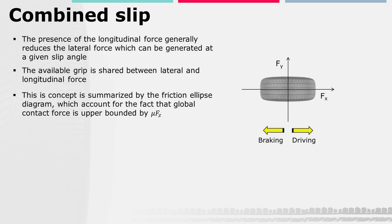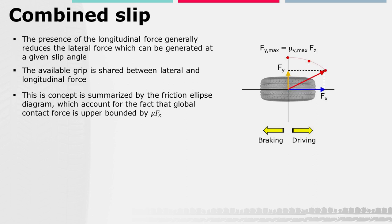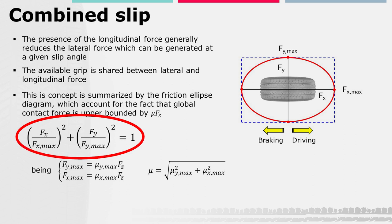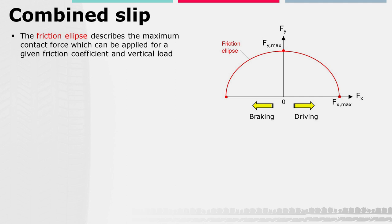The so-called friction ellipse diagram accounts for this concept. The maximum contact force a tire can develop is upper bounded by the product between the peak friction coefficient μ and the vertical load Fz. As shown in the animation, when no longitudinal force is applied, the lateral force can reach its maximum value Fy-max equal to μy-max·Fz. As a longitudinal force is applied, the lateral force reduces according to the equation of the friction ellipse: (Fy/Fy-max)² + (Fx/Fx-max)² = 1.